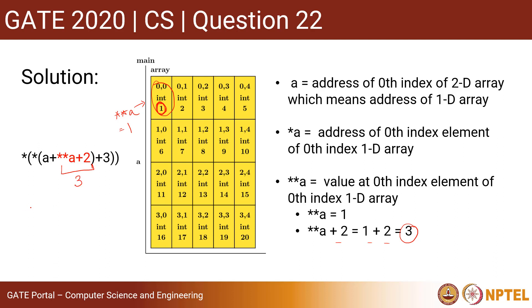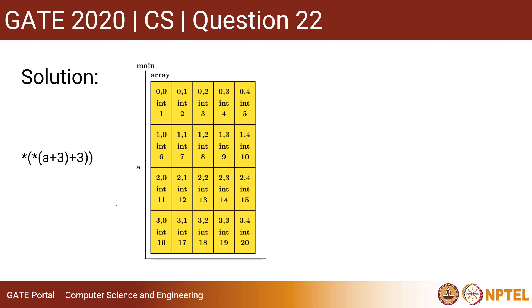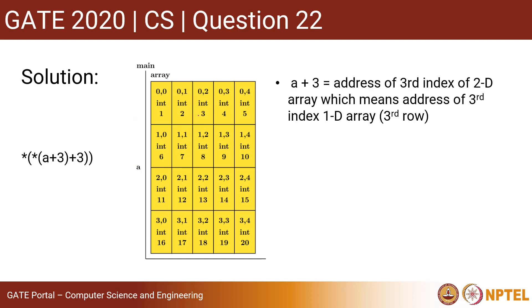So the expression reduces to `*(*(a+3) + 3)`. Now we have to calculate this expression. Here again is the pictorial form of the same array.